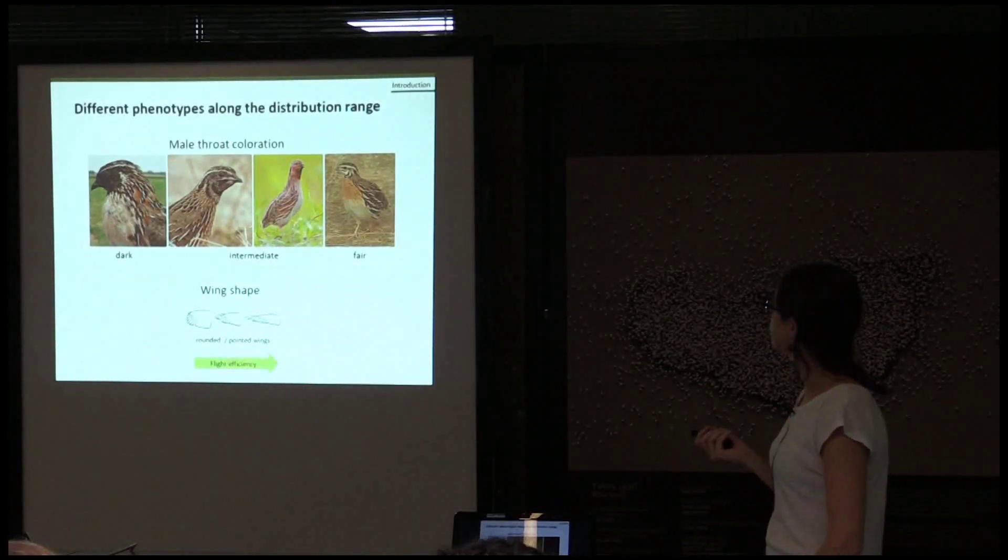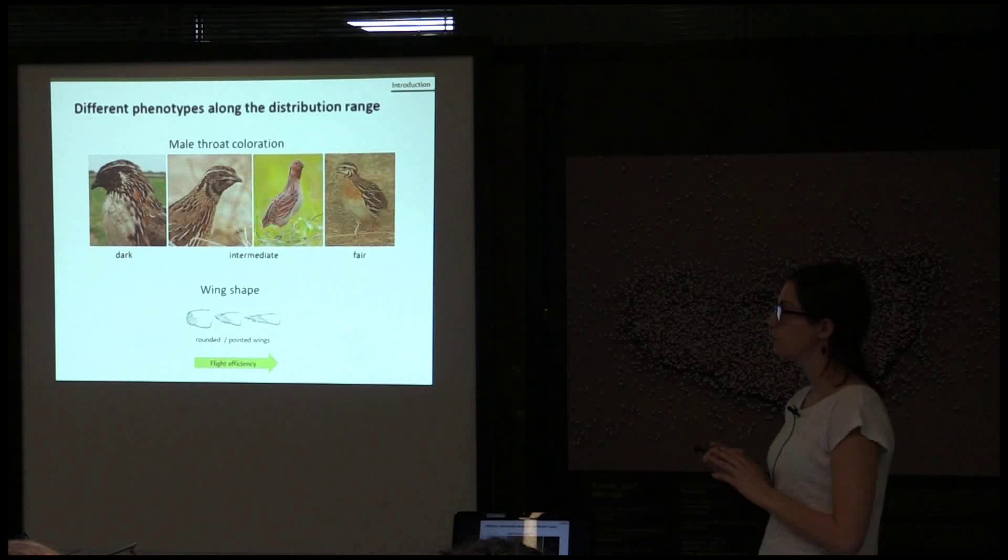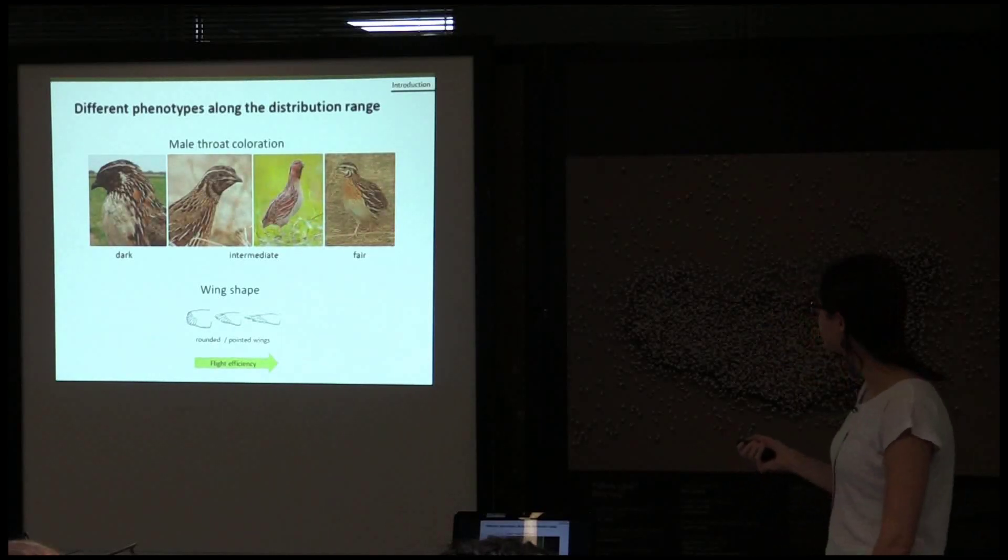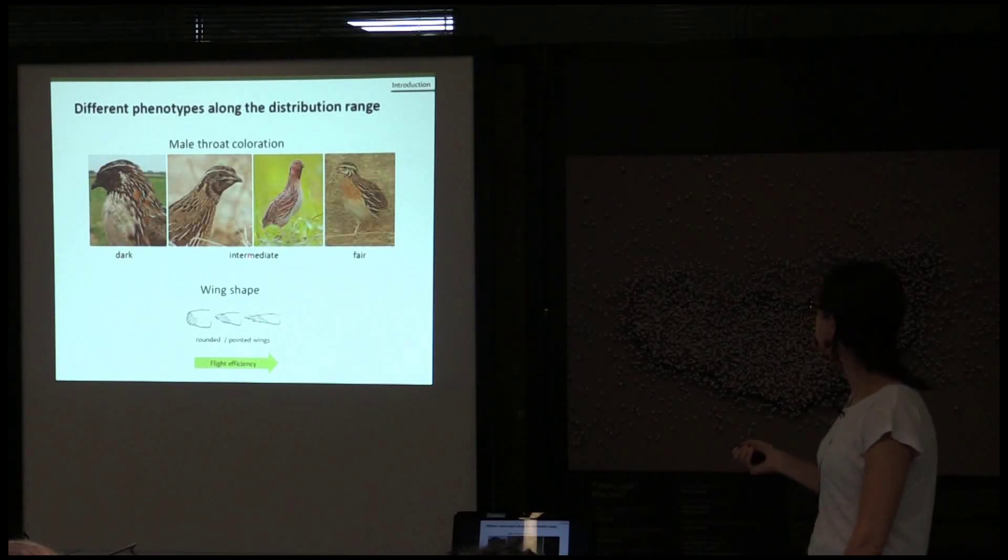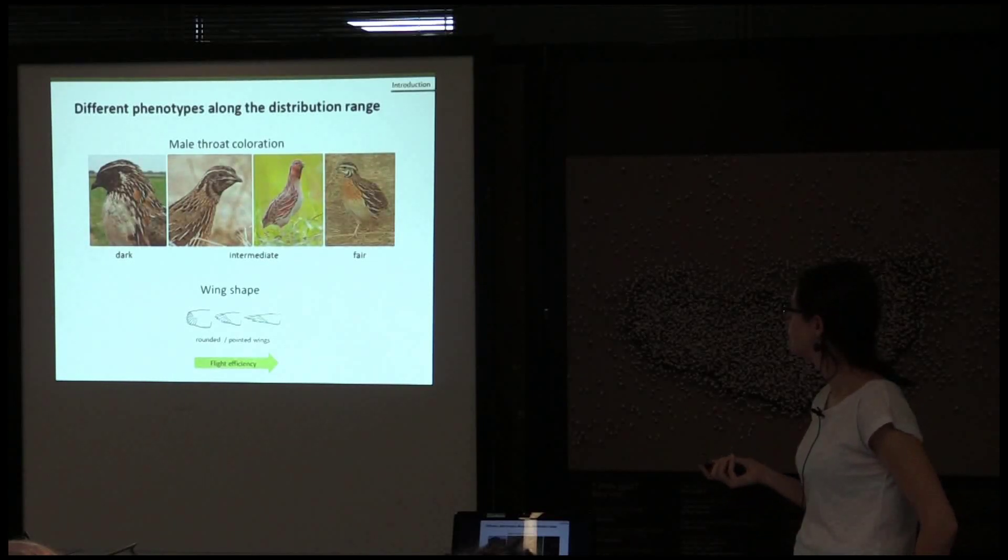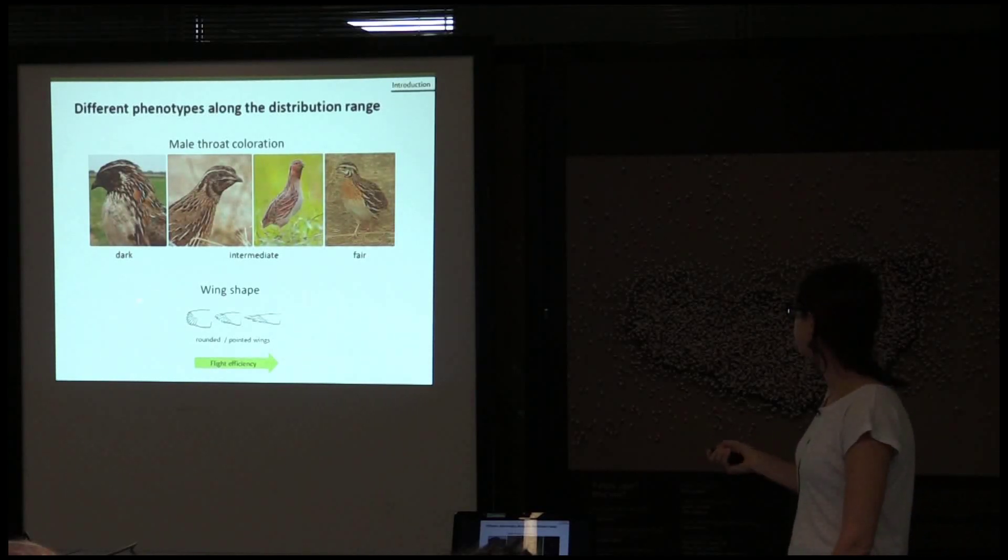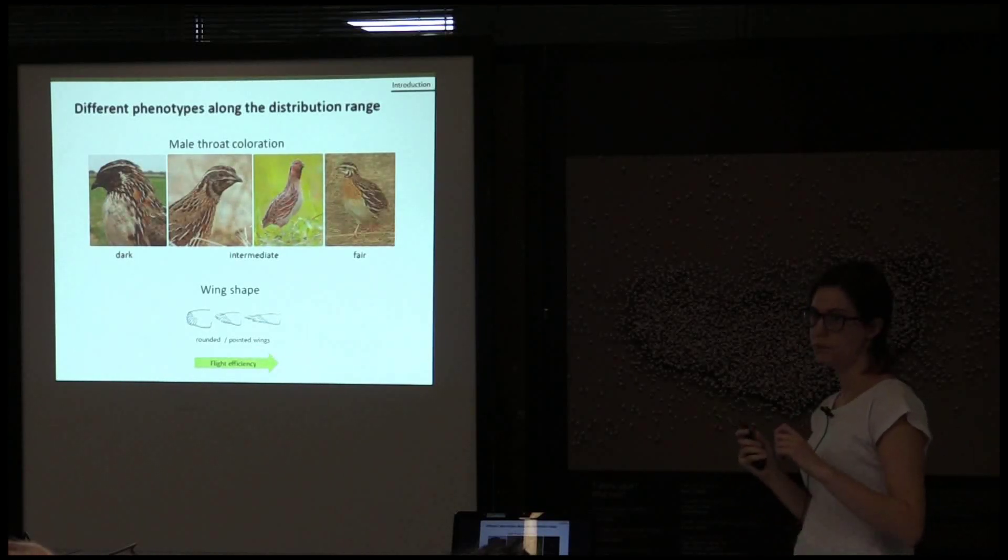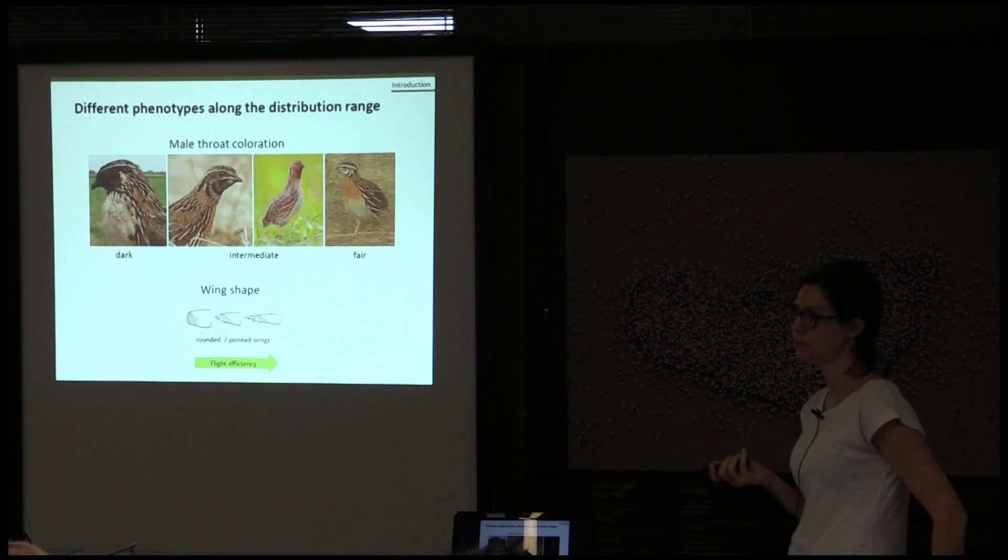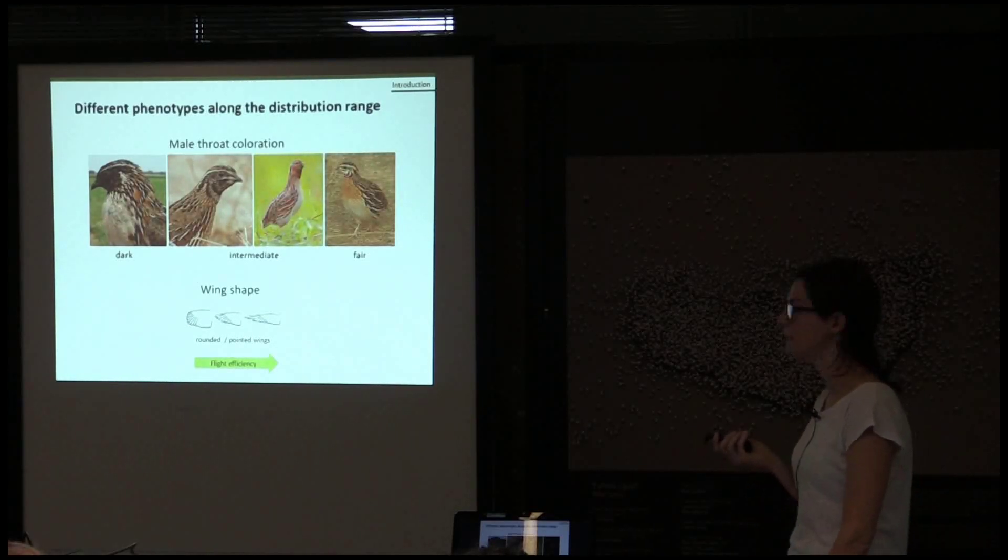In this region, there are different phenotypes, and the two phenotype traits that are variable are the male throat coloration. There are some individuals that are dark, others that are fair, but there are some intermediate individuals as well. Another variable trait is the wing shape. There are some that have rounded wings, others that are pointed, and the wing shape is known to be related with the fly efficiency, and therefore with the migratory behavior or potential of this species.